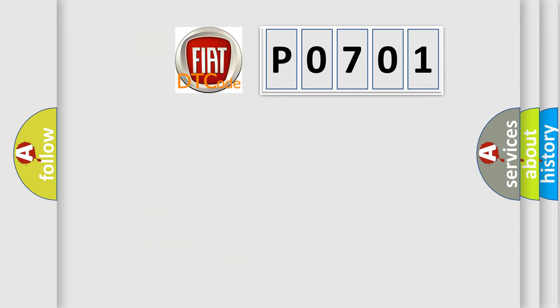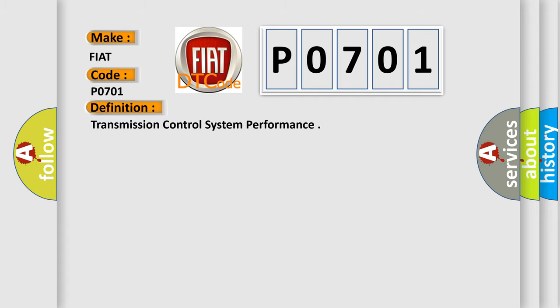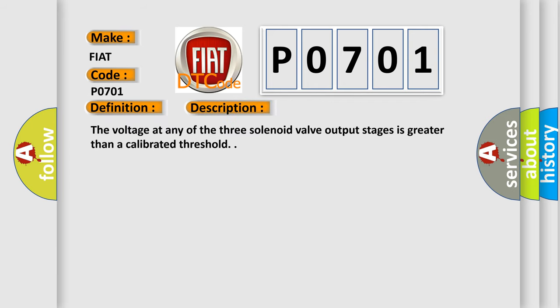So, what does the diagnostic trouble code P0701 interpret specifically for Fiat car manufacturers? The basic definition is transmission control system performance. And now this is a short description of this DTC code: The voltage at any of the three solenoid valve output stages is greater than a calibrated threshold.